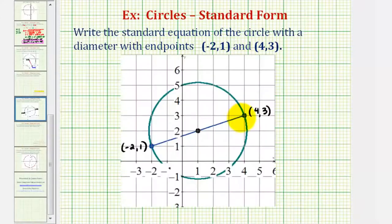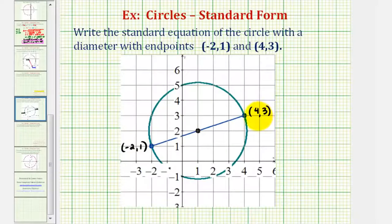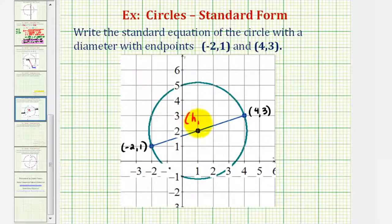Here's the diameter we're referring to. Notice how it has one endpoint at negative two, one, and another endpoint at four, three. Our goal here is to find the coordinates of the center, which would be h, k, and then the length of the radius, which would be the length of this segment here.